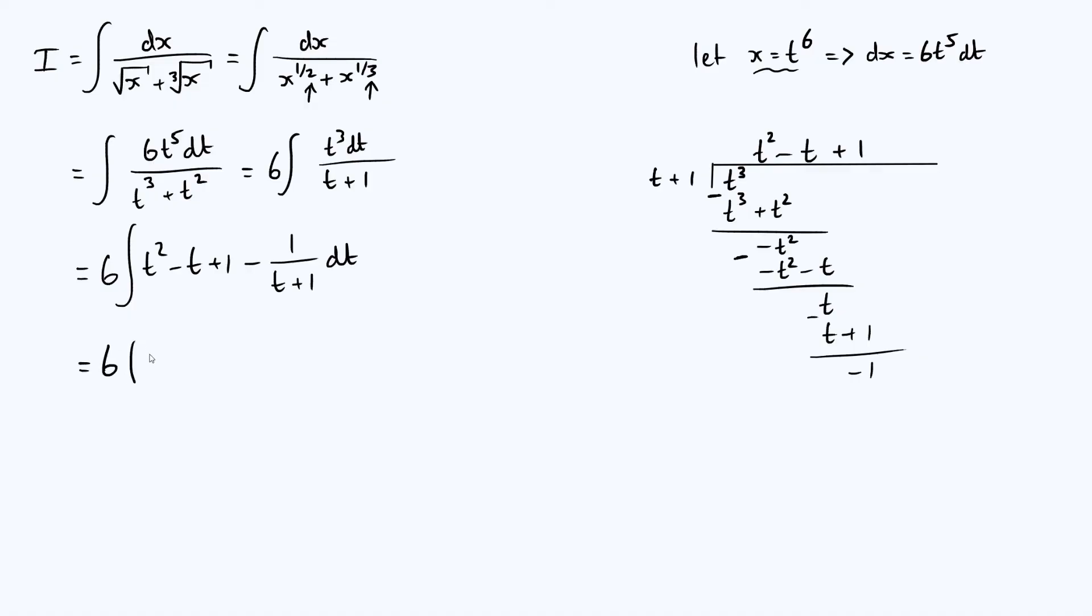So we get 6 times t cubed over 3 minus t squared over 2 plus t. And how about this 1 over t plus 1? Actually, that works out quite nicely. It's just minus the log of t plus 1. And then we mustn't forget to add our constant of integration. Let's call it c.